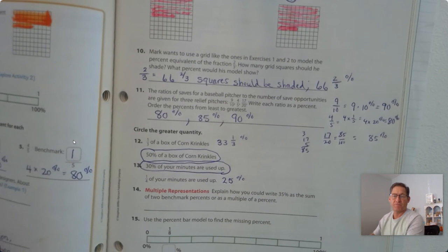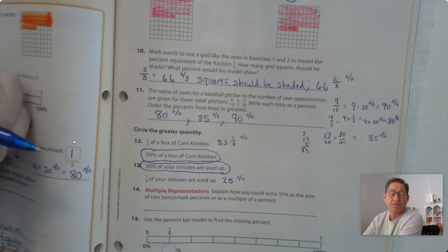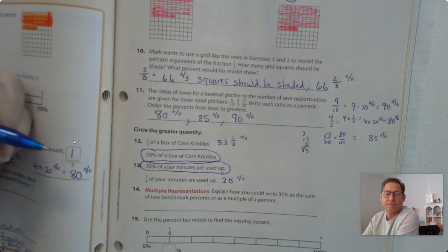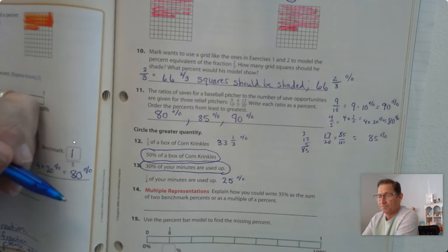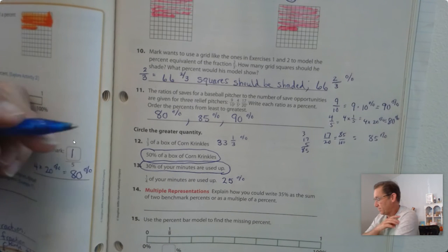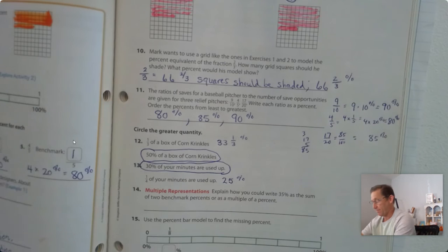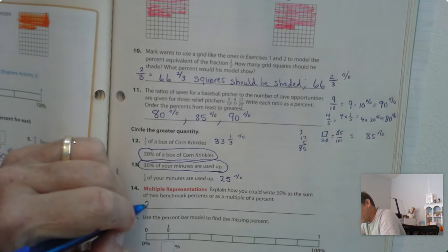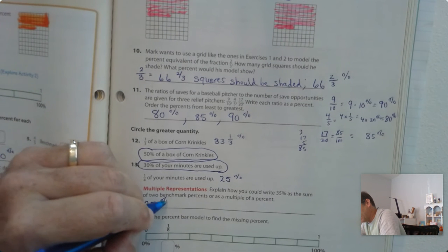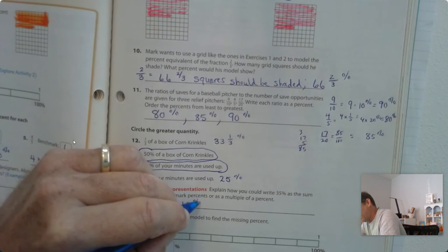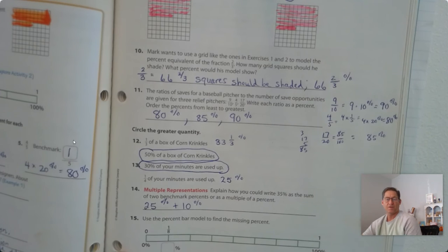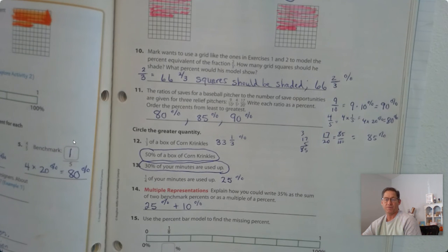Explain how you could write 35% as the sum of two benchmark percents, or as a multiple of a percent. So let's see. 25 plus 10%, right? So 25% plus 10%.